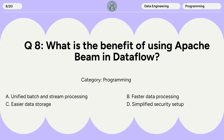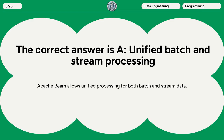Question 8: What is the benefit of using Apache Beam in Dataflow? A. Unified batch and stream processing. B. Faster data processing. C. Easier data storage. D. Simplified security setup. The correct answer is A. Unified batch and stream processing. Apache Beam allows unified processing for both batch and stream data.